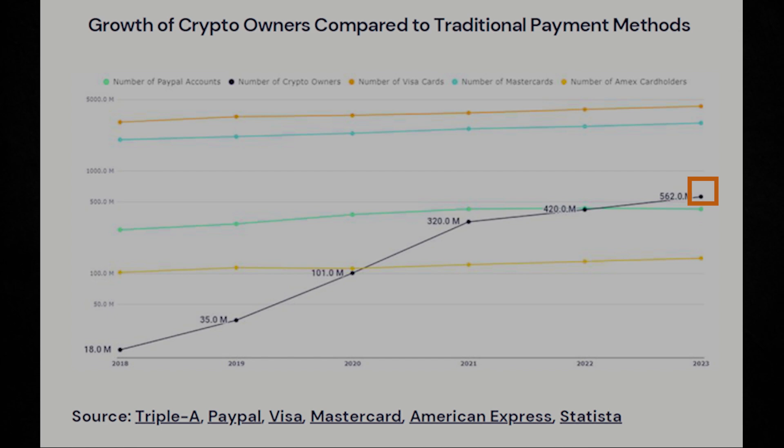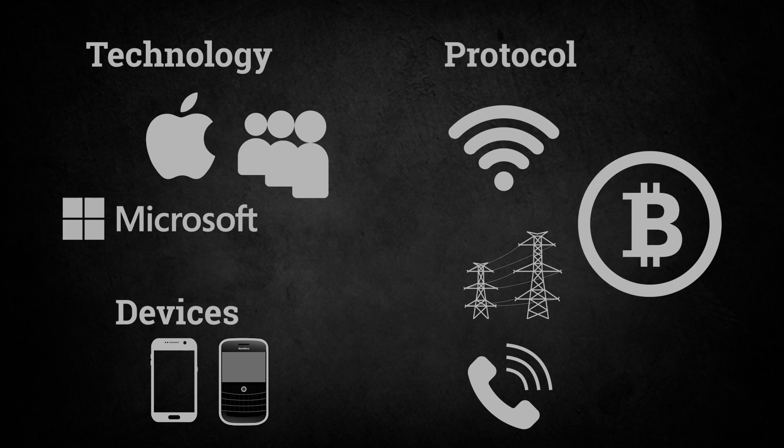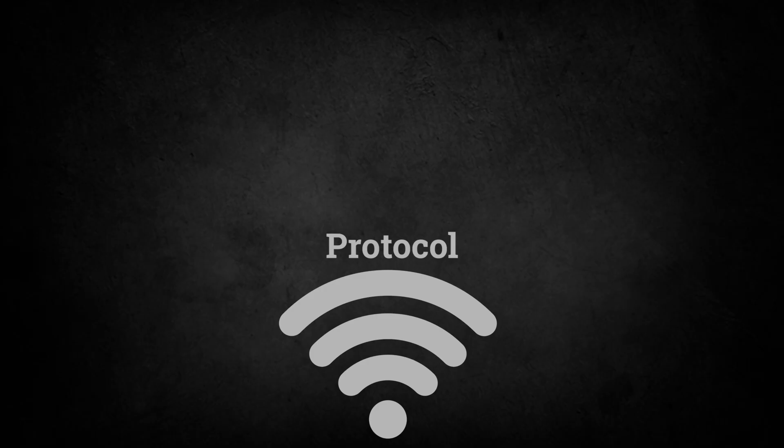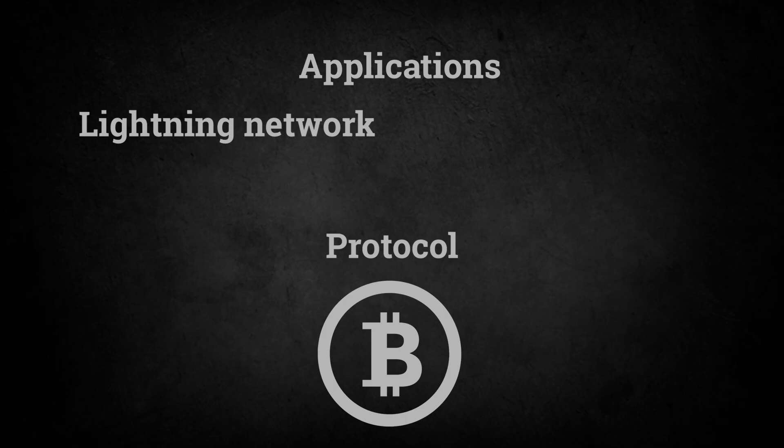Cryptocurrency ownership growth surpassed payment giants like American Express and PayPal. That's not a bubble pattern — that's how genuine protocol innovation spreads through society. Note that this is crypto adoption, not Bitcoin only — so even with this data, it shows how incredibly early we actually are. MySpace and BlackBerry were devices and applications. Bitcoin is a protocol like the internet itself or electricity infrastructure. The internet is the foundation that everything else builds on. Internet Explorer, Facebook, and even Google are just technologies that use the internet. Bitcoin is the foundational money protocol — everything else is just built on top of it.